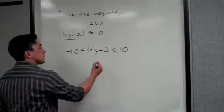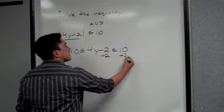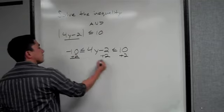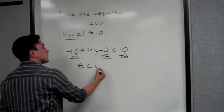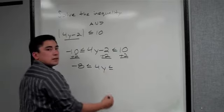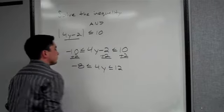Now, we need to get y by itself. So we add here, add in the middle, add to the right, add to the left. That gives us negative 8 is less than or equal to 4y, less than or equal to 12.